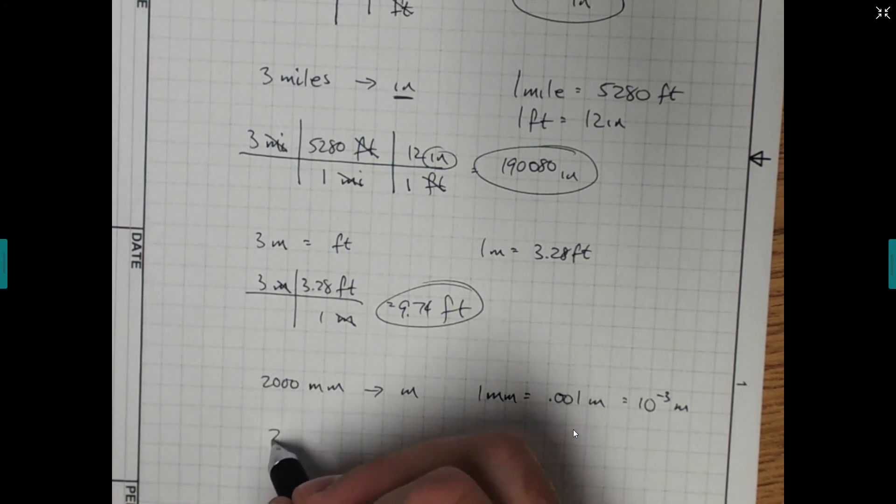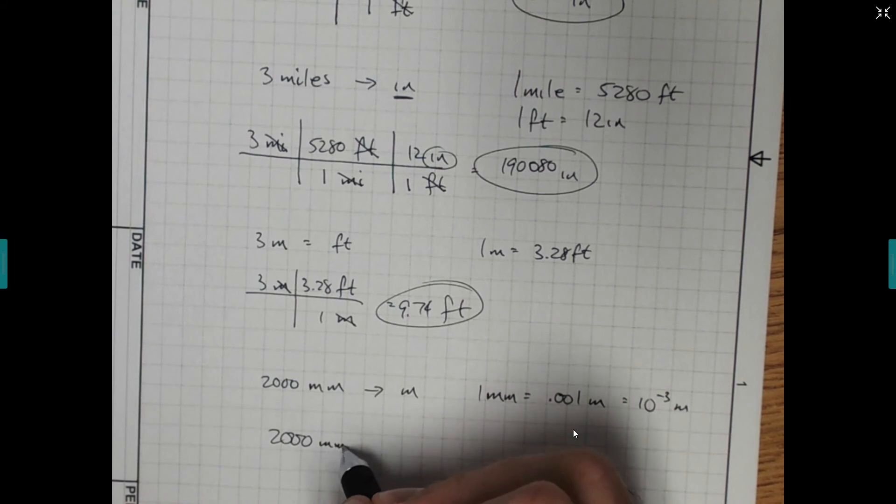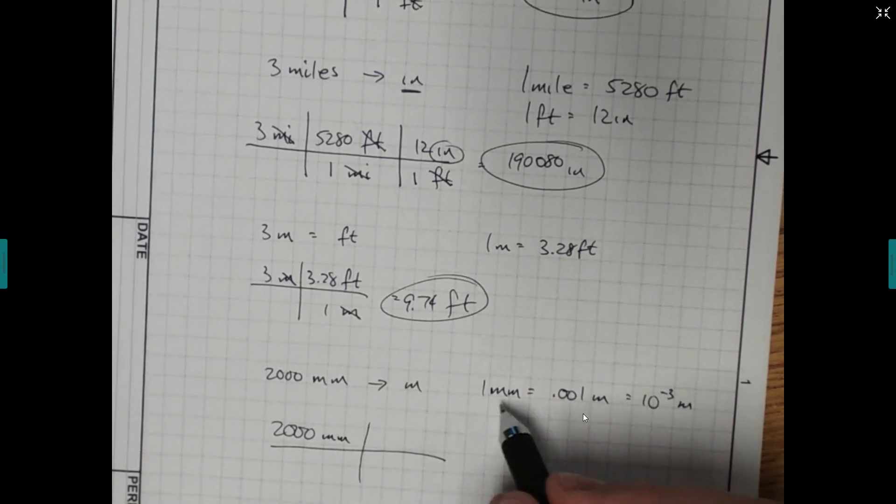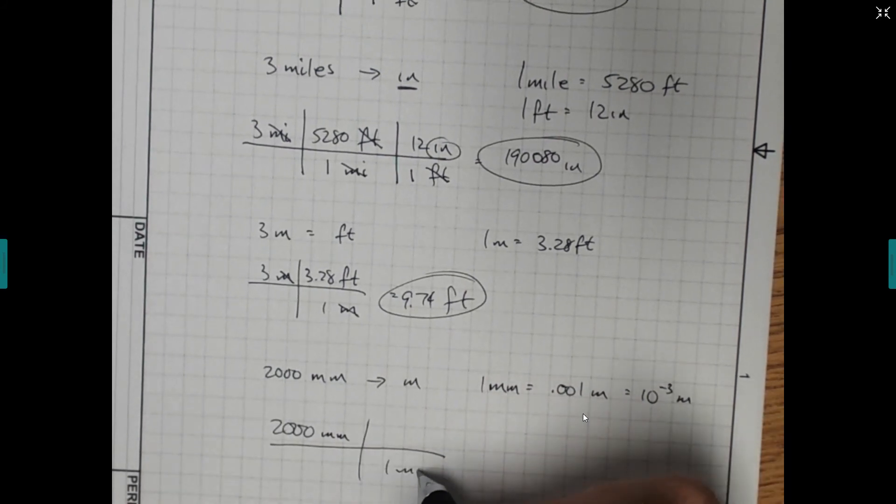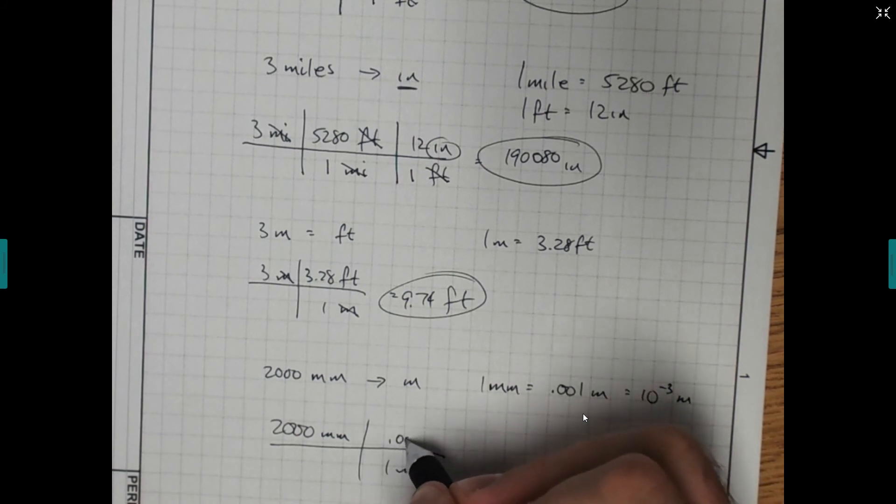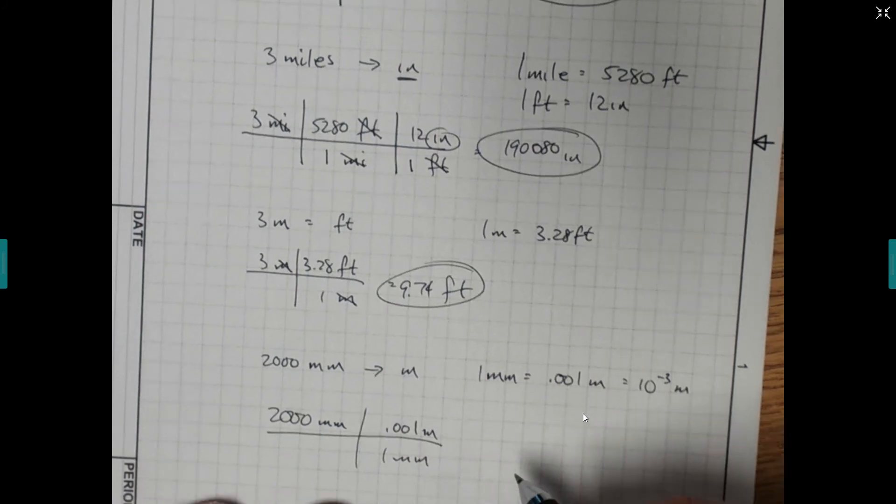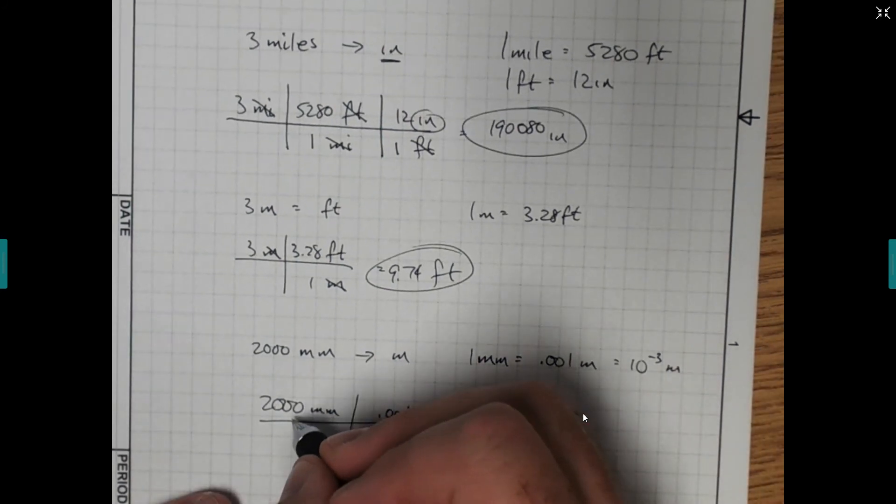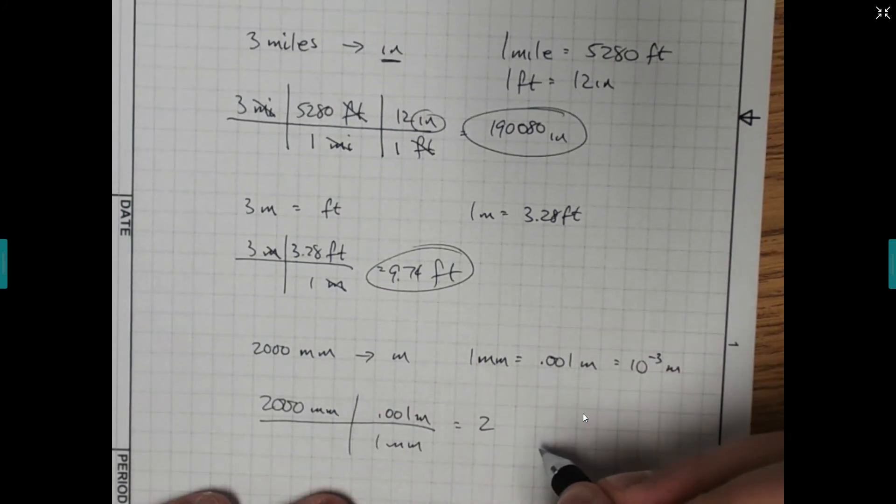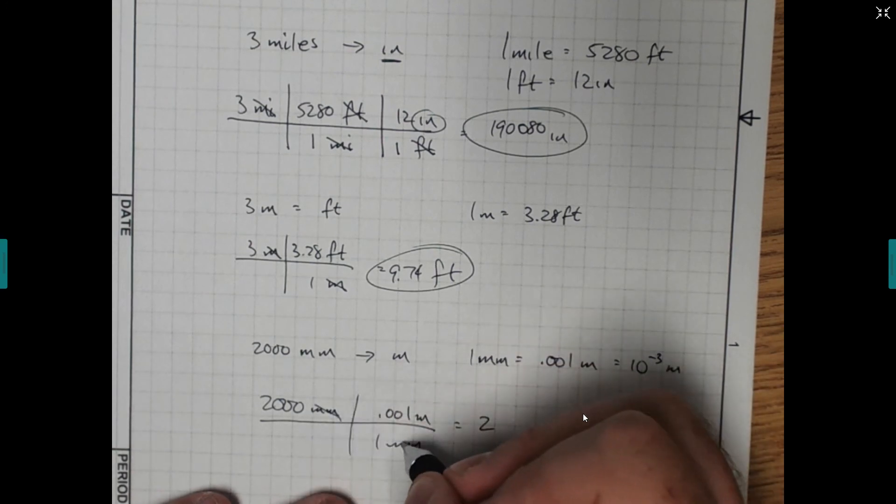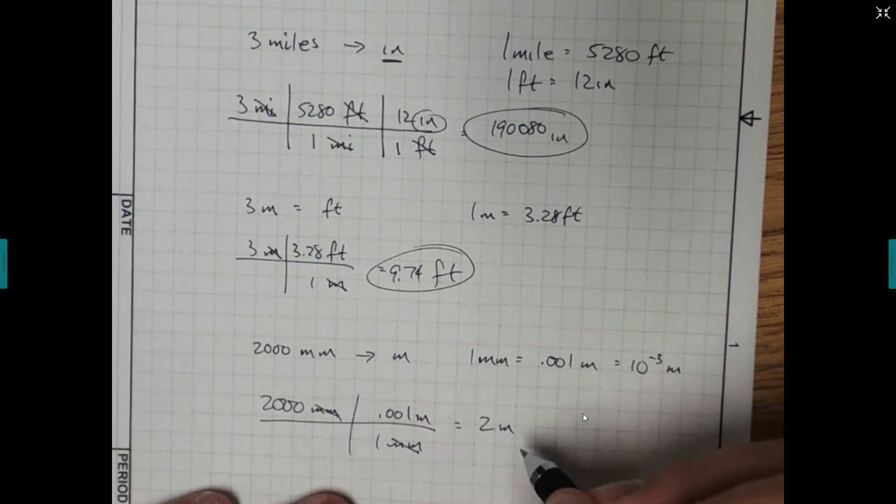And now we're doing the same thing. So if we have 2,000 millimeters, again, now we have this equality. So 1 millimeter on the bottom, 0.001 meters. We multiply that through. 2,000 times 0.001. Basically, we're just moving our decimal three places. And we have 2, the millimeters go away, and what's left over is we have meters.